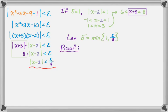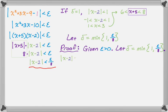Now let's do the proof. All of these proofs start with: given ε > 0 — do not forget that. Let δ = min(1, ε/8). Then |x − 2| < δ implies |x − 2| < ε/8. Because ε/8 is smaller than 1, multiplying both sides by 8 gives 8|x − 2| < ε.